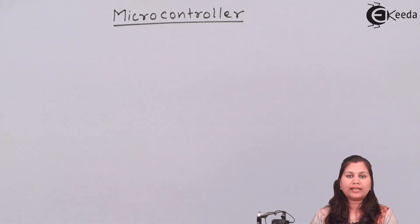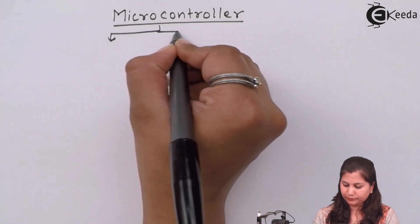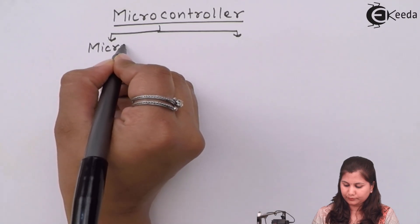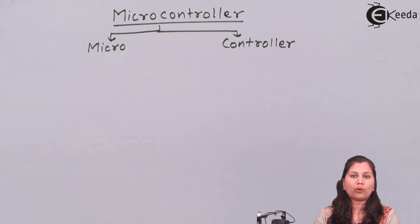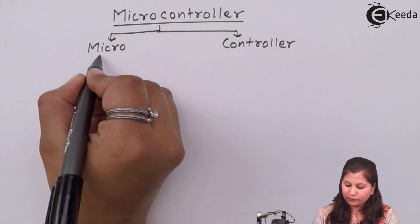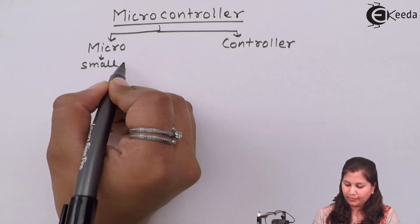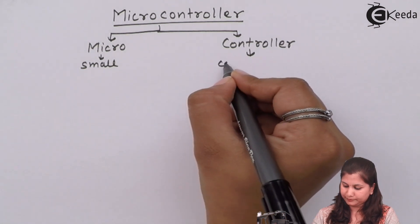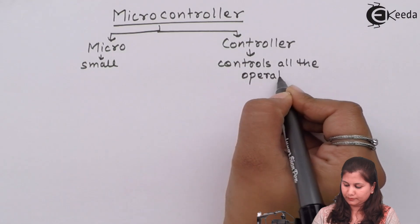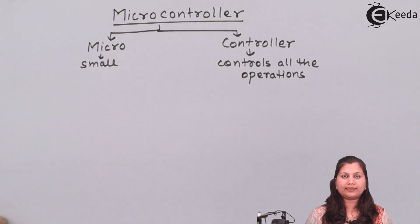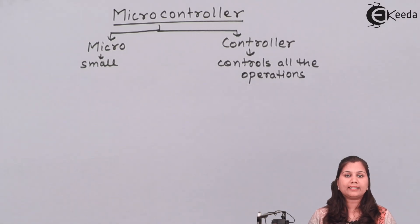This word microcontroller is composed of two terms: micro plus controller. Micro means very small in size, and controller means a device which controls the operations of all the devices. So microcontrollers are devices which are very small in size and they control the operations of all the other devices.